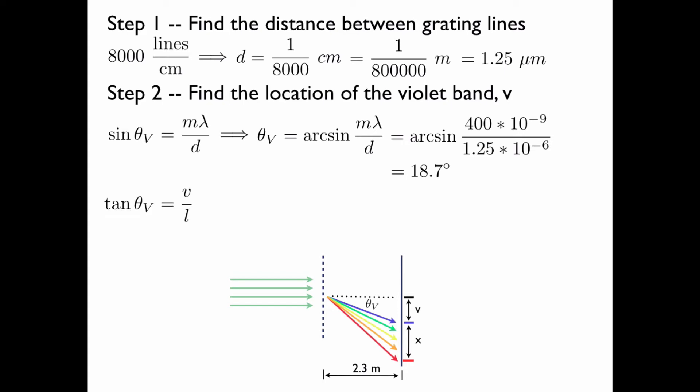This gives us the value for the angle. Now, in order to find the distance V, we use a little geometry. Looking at the diagram below, we see that tangent of the angle is equal to opposite over adjacent, V over L.